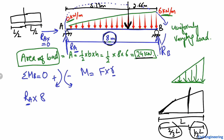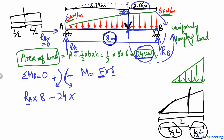The 24 kilonewton force creates an anti-clockwise moment about point B, so it is negative. This is why we converted the uniformly varying load into a pointed load — to find the moment we need a force and its distance. So: minus 24 multiplied by 2.66 equals zero, giving us RA × 8 = 63.84.